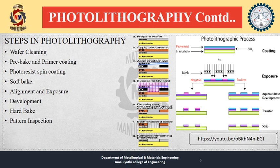The wet treatment, for example, like the RCA clean procedure based on solutions in hydrogen peroxide. Other solutions made with trichloroethylene, acetone, or methanol can also be used to clean. For pre-bake, the wafer is initially heated to a temperature sufficient to drive off any moisture that may be present on the wafer surface — 150 degrees Celsius for 10 minutes is sufficient.